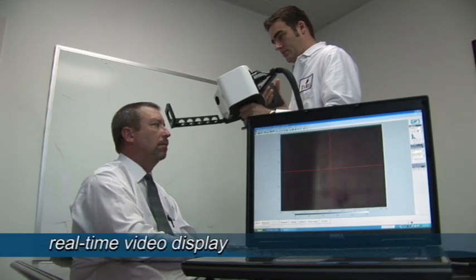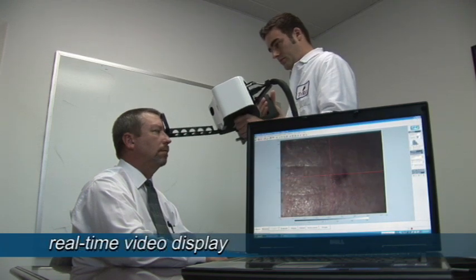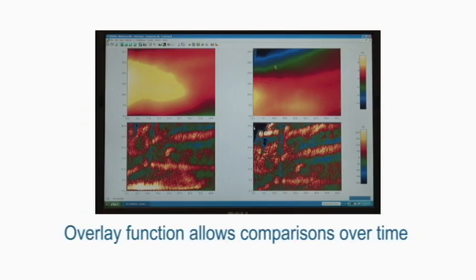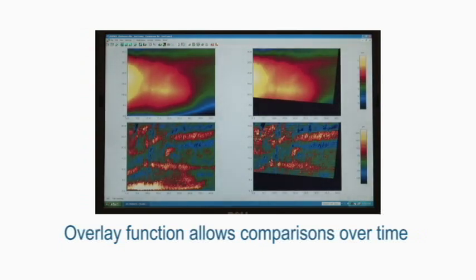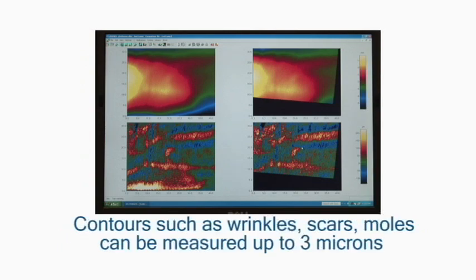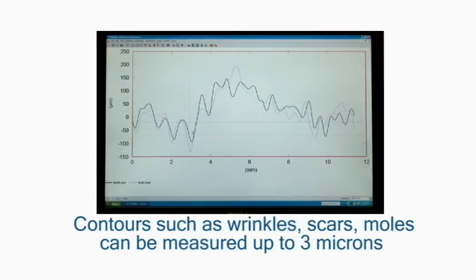The patented software provides real-time video display for analysis. The overlay function allows direct comparison of images taken over time. Using graphic measurement and color texture representation, changes can be quantified and measured. Contours such as wrinkles, scars, moles, and other abnormalities can be measured with accuracy up to 3 microns. These images can be used to verify progress or changes over time as a result of treatment or procedure performed on a patient.